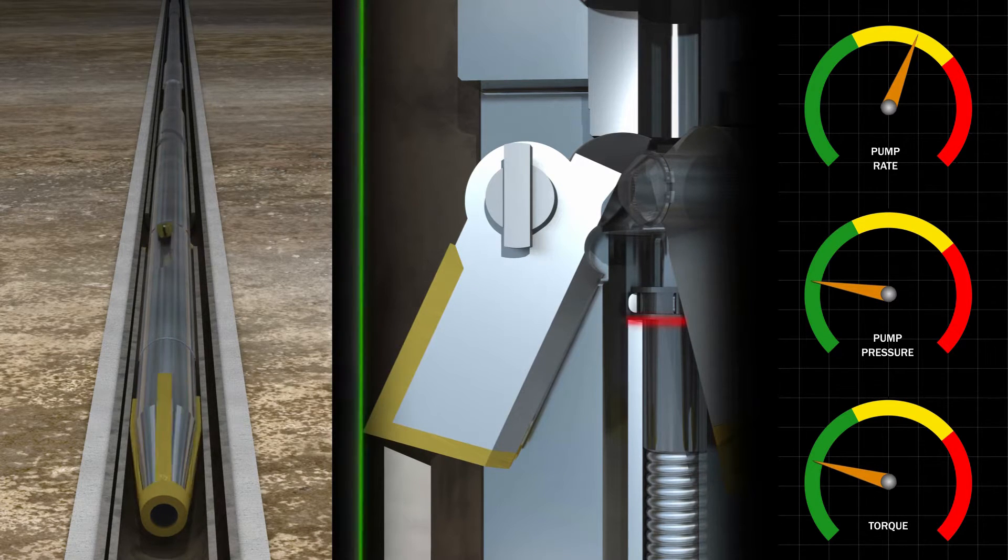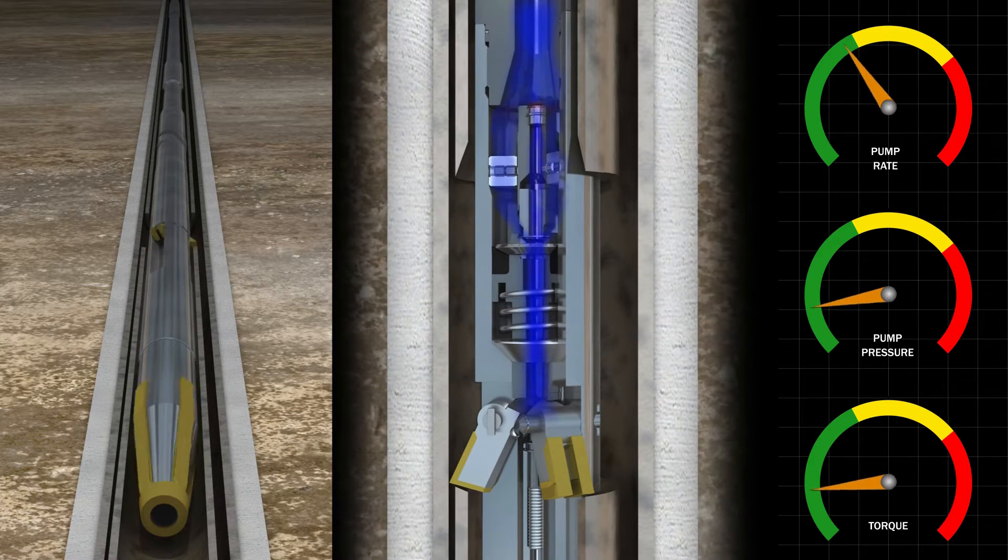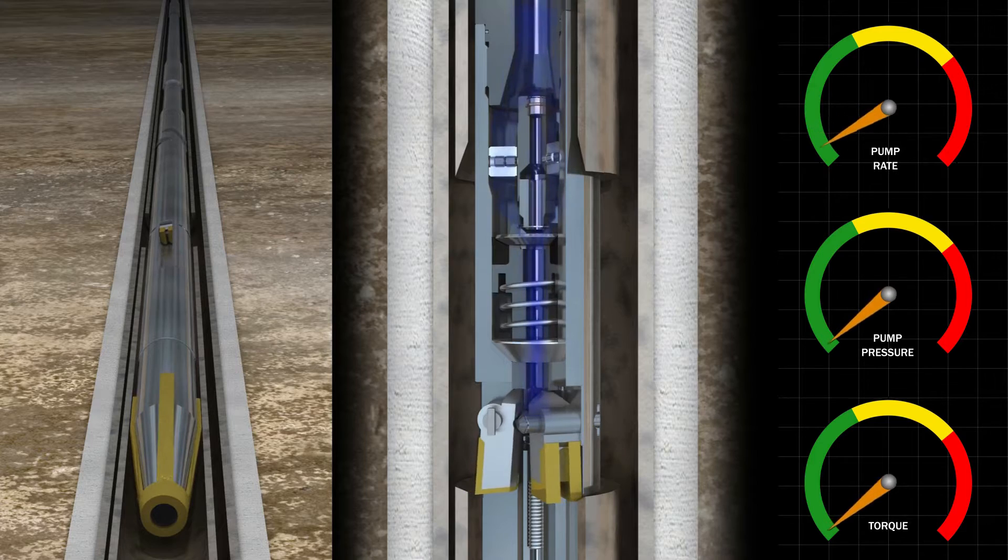the knives will expand until the hard stop diameter is reached. The cutter will not expand past this diameter. This ensures that only the inner casing is cut and prevents any damage to the outer casing.